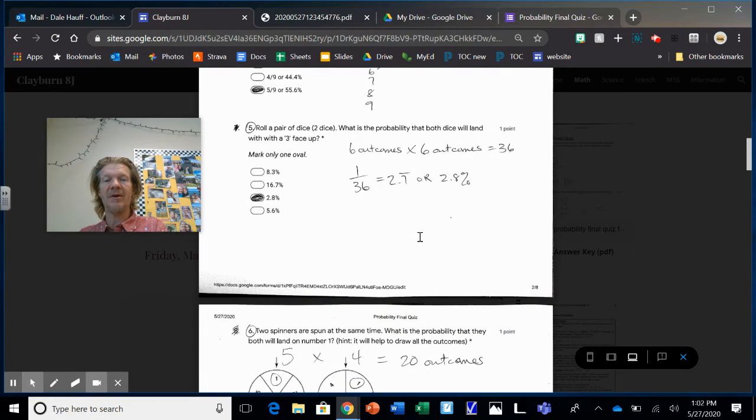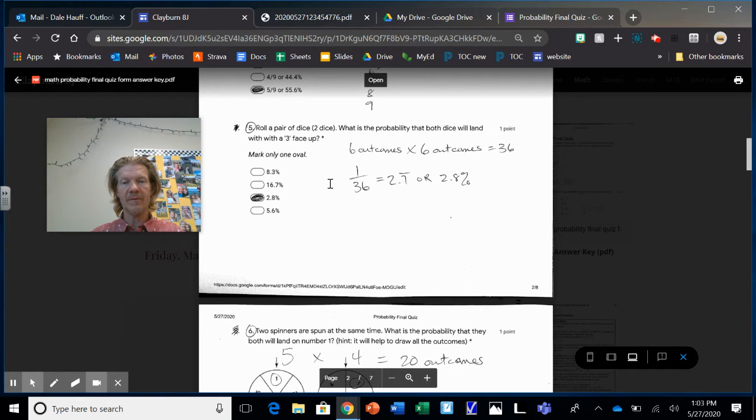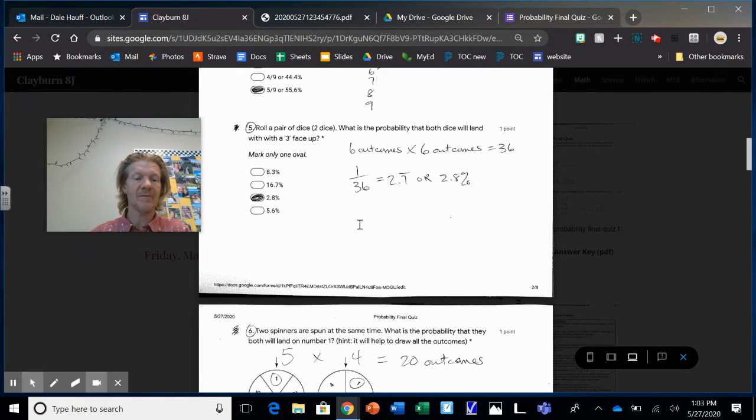Number five, roll a pair of dice. What's the probability the dice will land with the three face up? Now I could list this all out in one of those trees. So one two three four five six. And then if I get a one on the first dice, I can get a one two three four five six on the second. If I get a two on the first dice, I can get a one two three four five six on the second. If I get a three, but it would be a big job. So the shortcut works like this. Six outcomes on the first dice. Six outcomes on the second dice. Six times six is 36. So there's 36 outcomes. There's only one way to get a three and a three. So one out of 36, that's it.